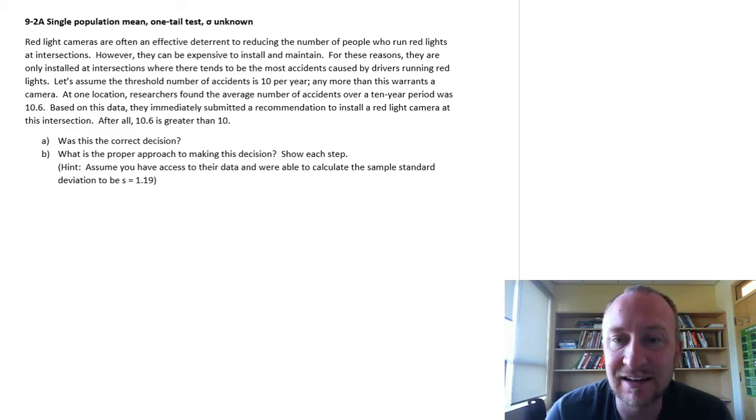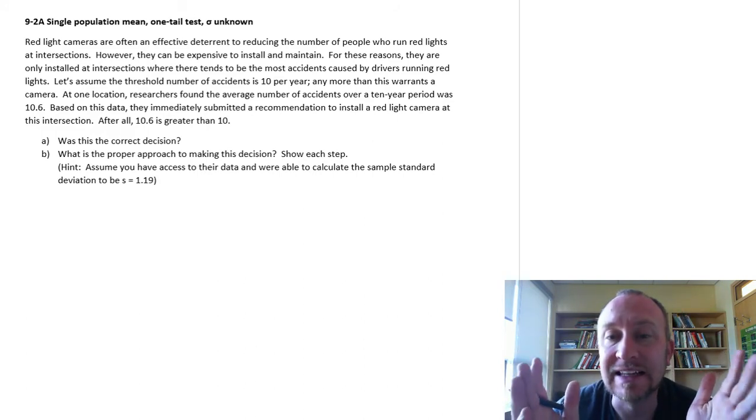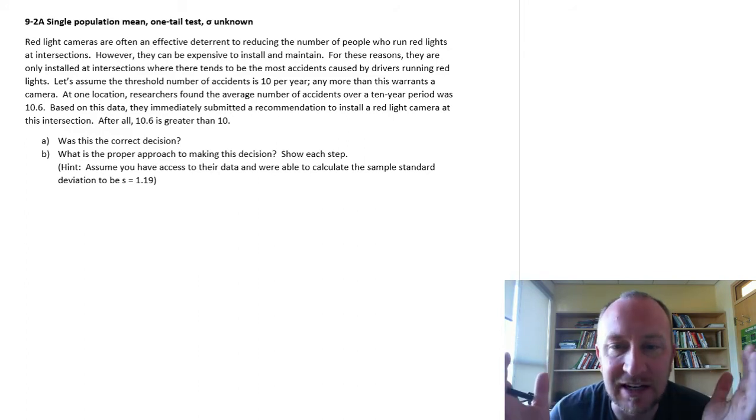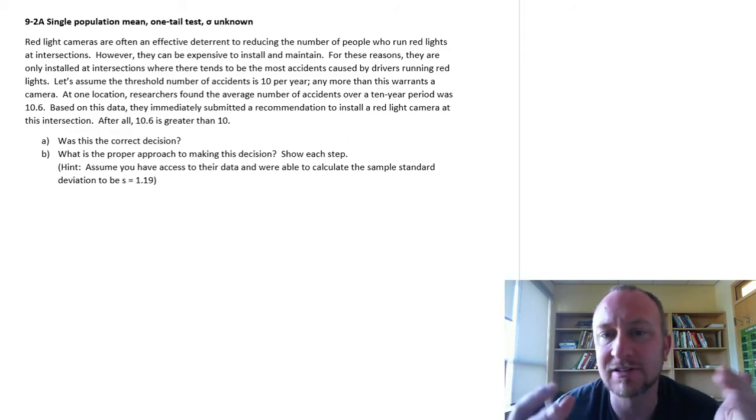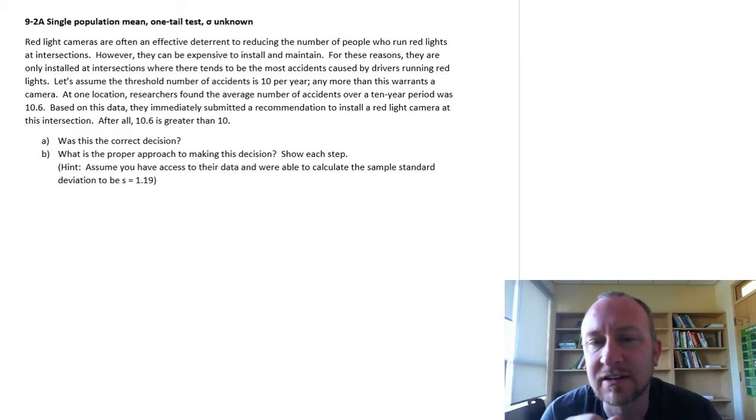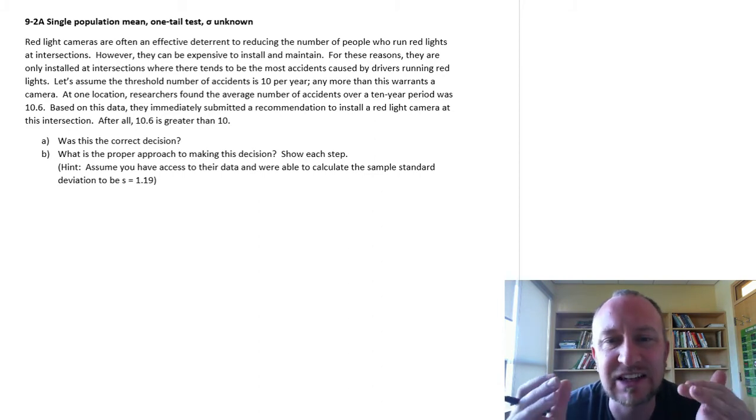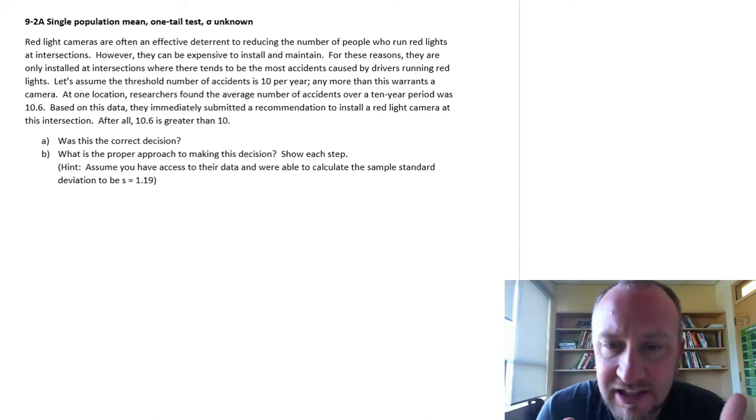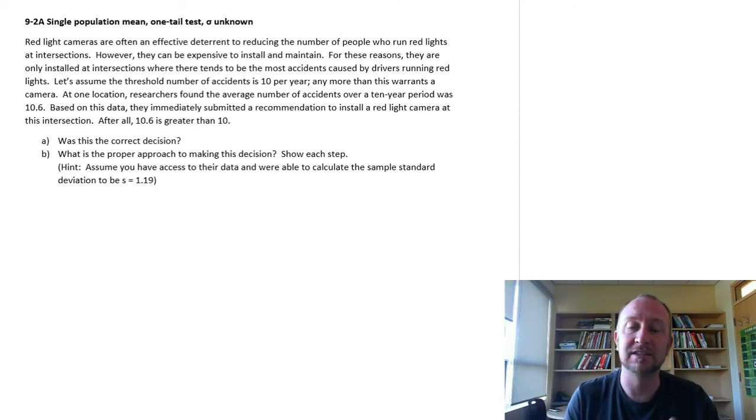Unlike the z-distribution, of which there's only one, the t-distribution has many, many variants all dependent on the particular sample size. So we'll have to calculate degrees of freedom and it's really not a complicated step. And so we'll just go through this exercise and you'll see how similar it is as we go through.